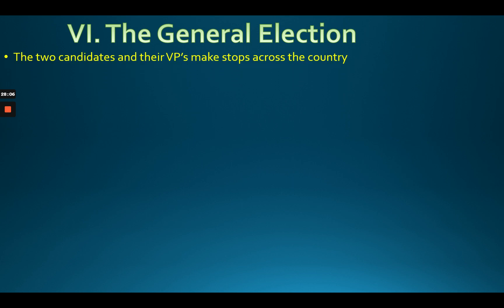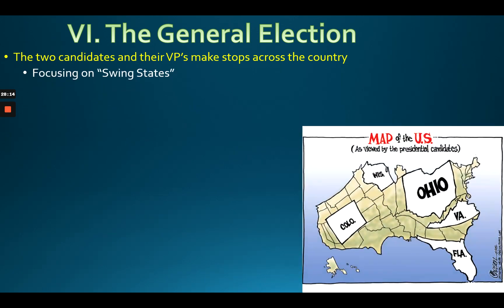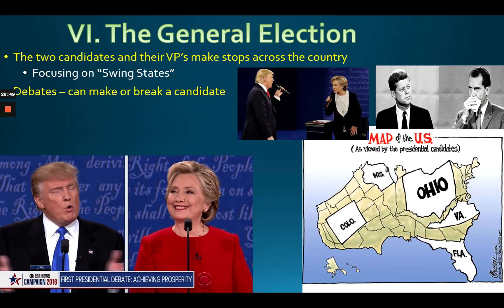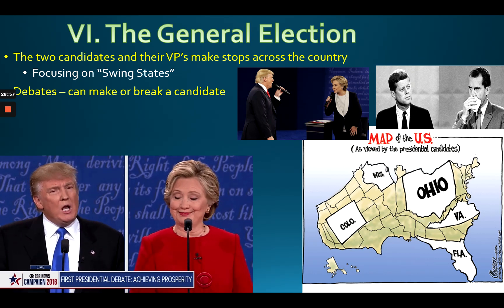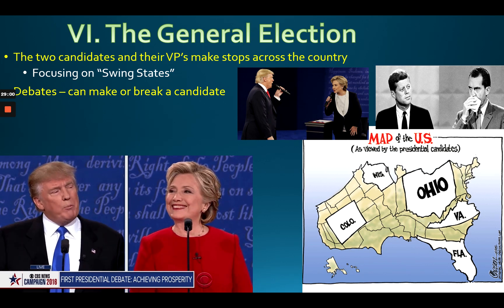In the general election, the two candidates go around the country focusing on swing states and big states. Back in 2016, those were the swing states, though it's changed a bit. Candidates ignore states that aren't competitive — no candidate campaigns in California even though it's large, because Democrats will win it no matter what. Texas is sometimes considered a swing state, but Democrats haven't been able to take it recently.